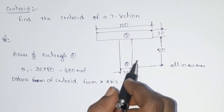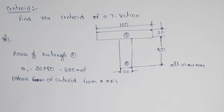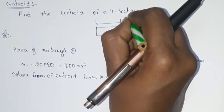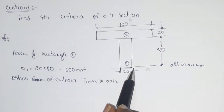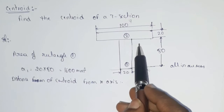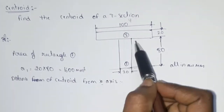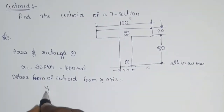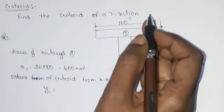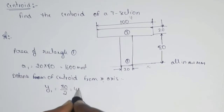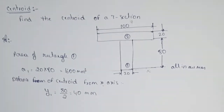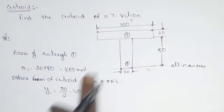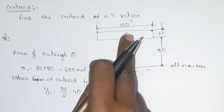So, this is the x-axis. The distance of the centroid from the x-axis is to be determined using this reference.